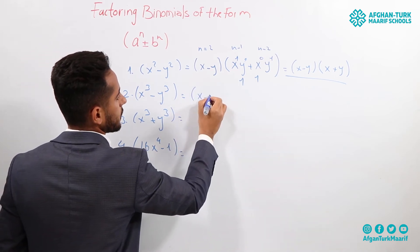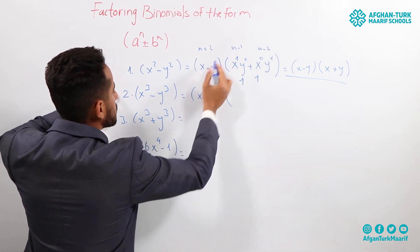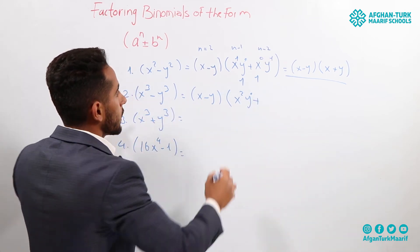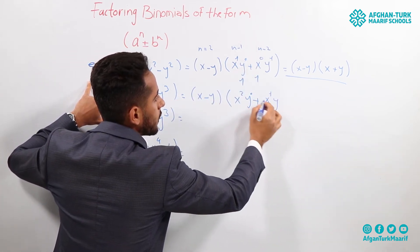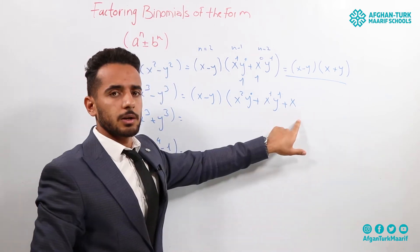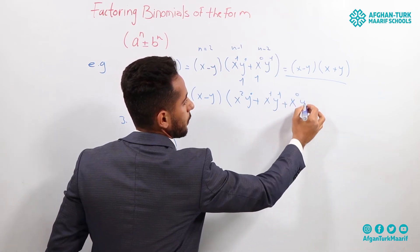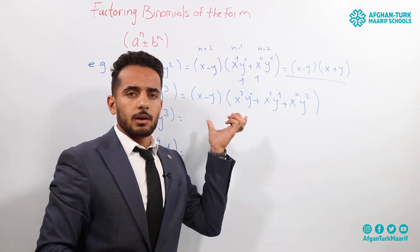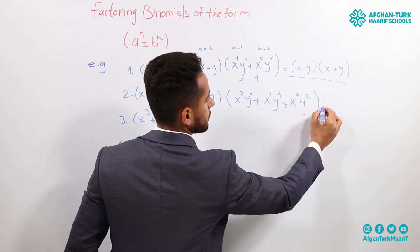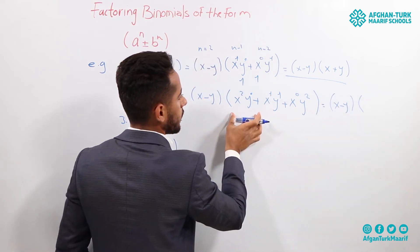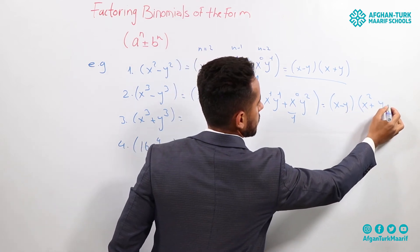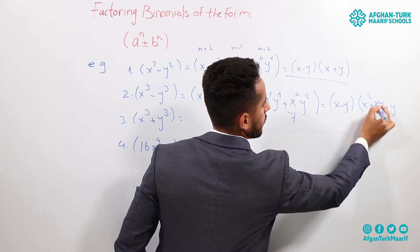Second question: x cubed minus y cubed. The first parenthesis is x minus y. In the second parenthesis, n equals 3: n minus 1 is 2, so x to the power of 2 times y to the power of 0, plus x to the power of 1 times y to the power of 1, plus x to the power of 0 times y to the power of 2. The answer is x minus y times x squared plus xy plus y squared.